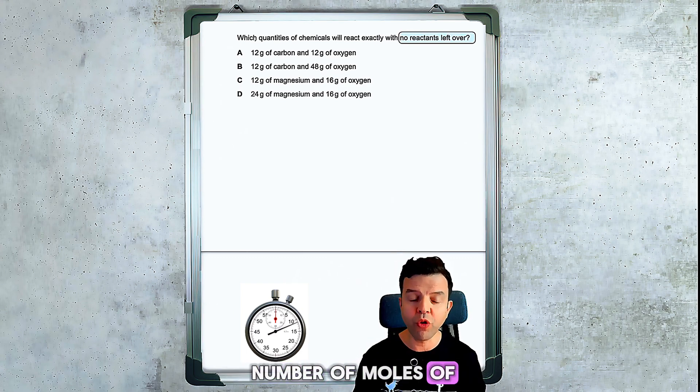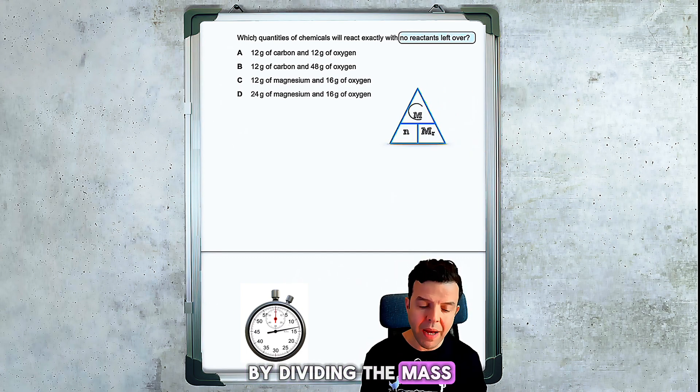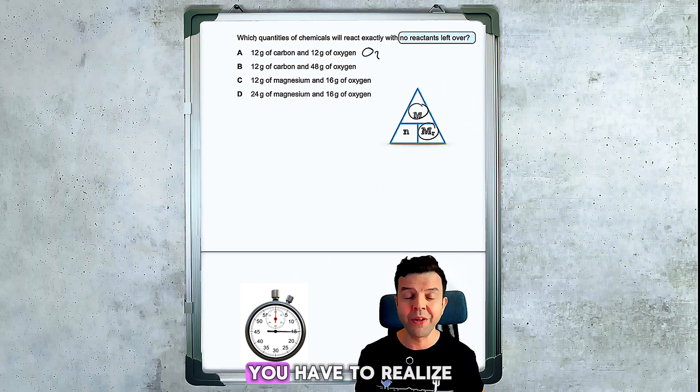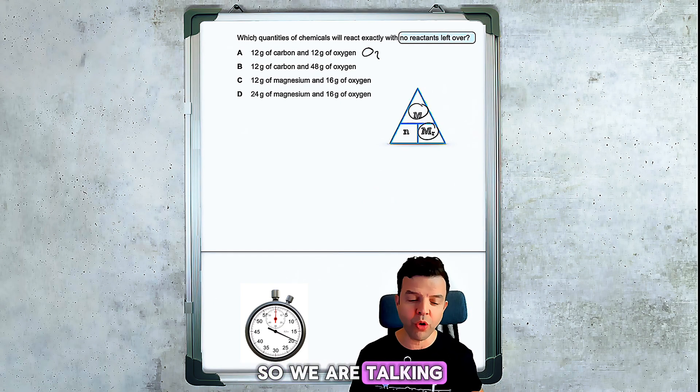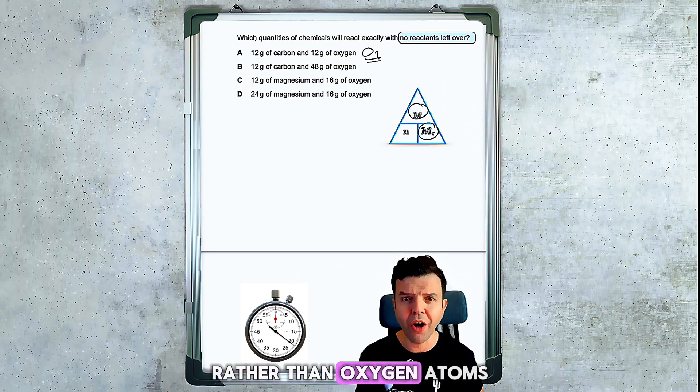I would find the number of moles of each quantity by dividing the mass over the molecular mass. You have to realize that oxygen reacts in diatomic form, so we are talking here about O2 rather than oxygen atoms.